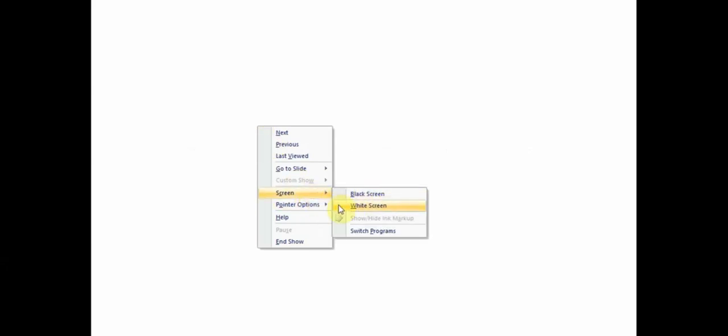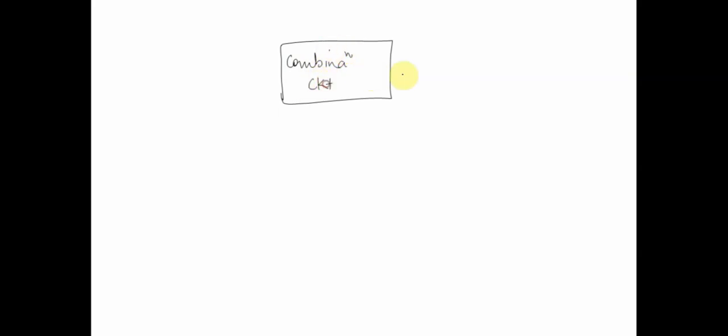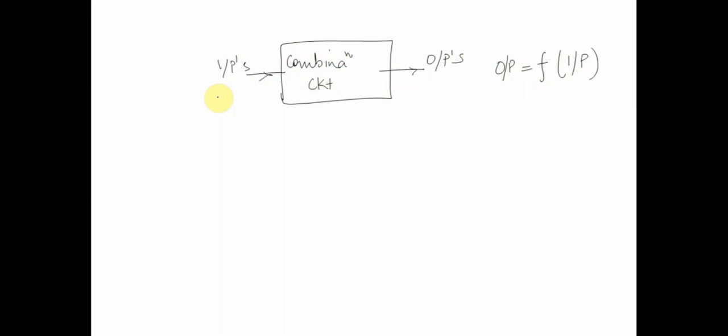To begin with, what we have seen till now are combinational circuits. A combinational circuit has a set of inputs and a set of outputs, and the output at any particular state is dependent on or a function of only the inputs. It does not depend upon anything else, and the same set of inputs will yield the same output.